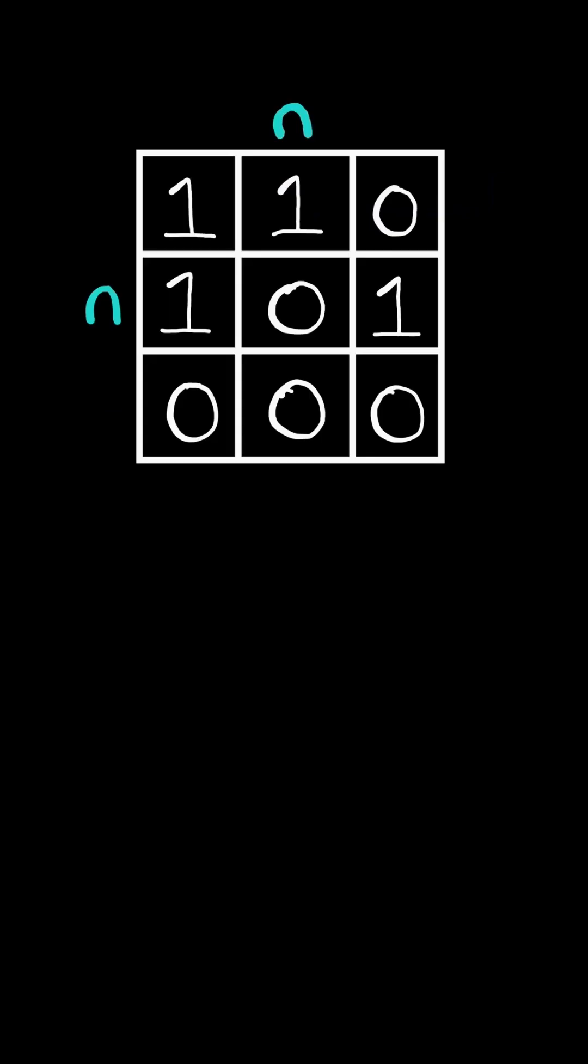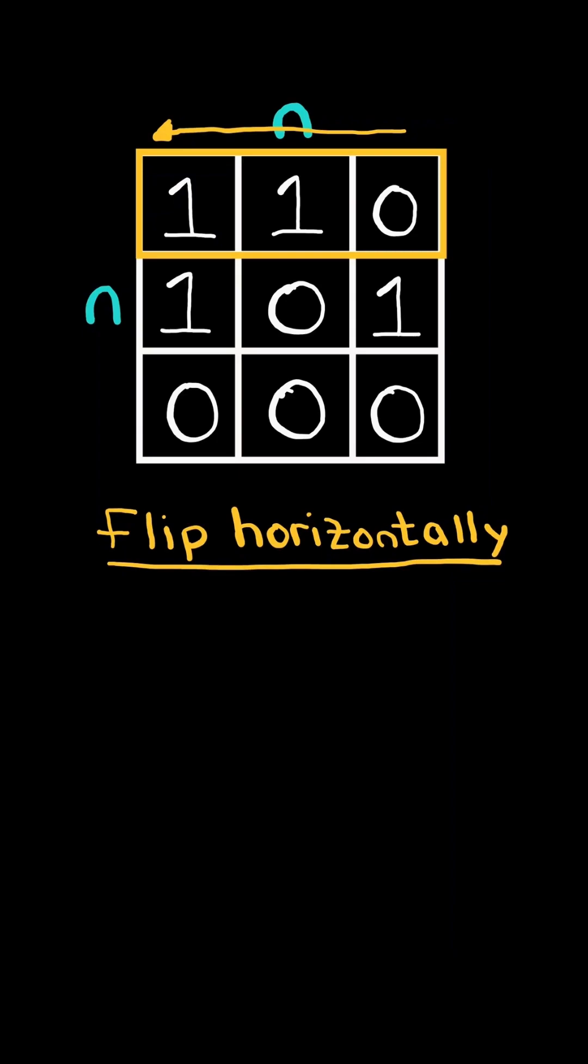Flipping an image. Given an n-by-n binary matrix, let's consider the first row of the matrix. We want to flip the row horizontally, which means we want to reverse the row.